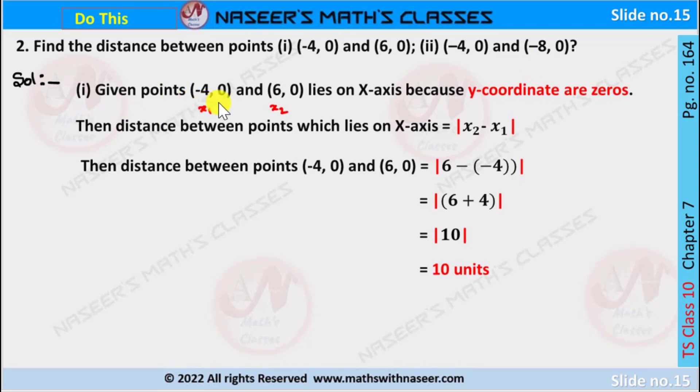First one, we write the given points (-4, 0) and (6, 0). These points lie on x-axis because the y-coordinates are zeros. Then distance between points which lie on x-axis is written as |x₂ - x₁|.